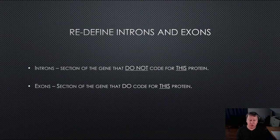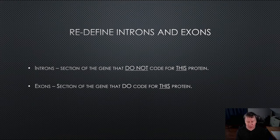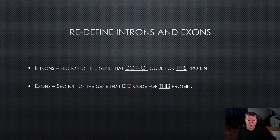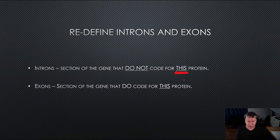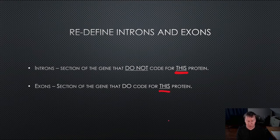And I want you to start thinking about the idea of introns and exons in that way. So before I said introns don't code for a protein and exons do. That was not entirely accurate. Introns are portions or sections of a gene that do not code for this protein. They might be useful in another context, but they do not code for this protein. Exons, on the other hand, are a section of a gene that do code for this protein.